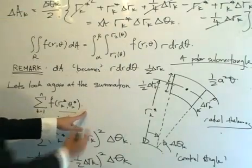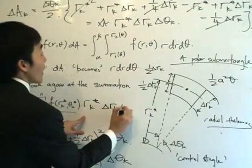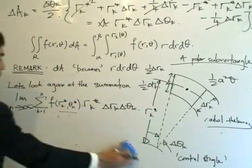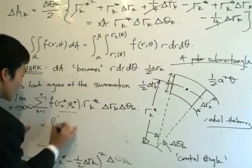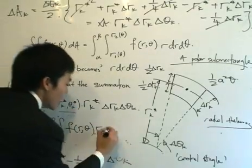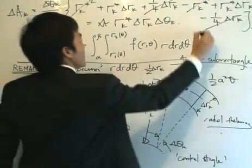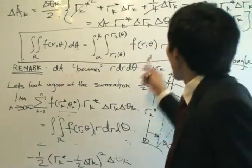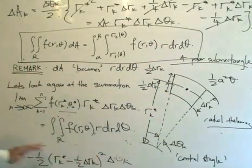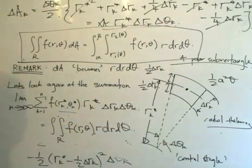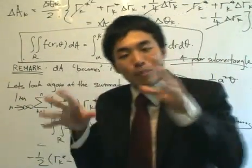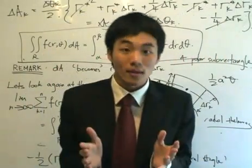Substituting this expression back into the summation gives us the sum of f(rₖ*, θₖ*) · rₖ* · Δrₖ · Δθₖ. Taking the limit as n tends to infinity, all the infinitesimal quantities become the variables themselves, giving us the double integral over region R of f(r, θ) · r dr dθ — exactly what we have in the theorem. That is why the extra r term appears. Always remember to multiply the function by r when dealing with polar coordinates. Examples are coming up soon.